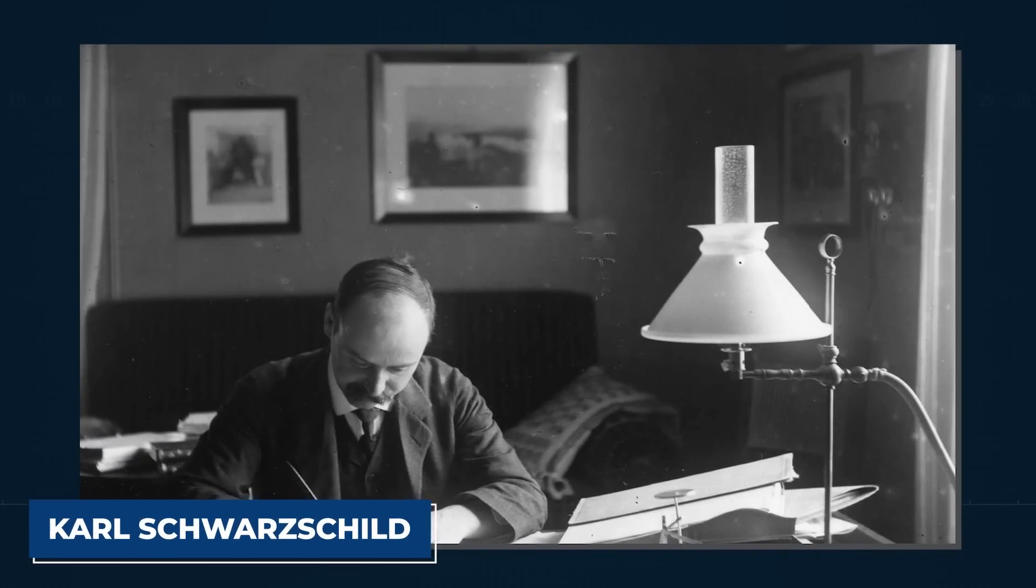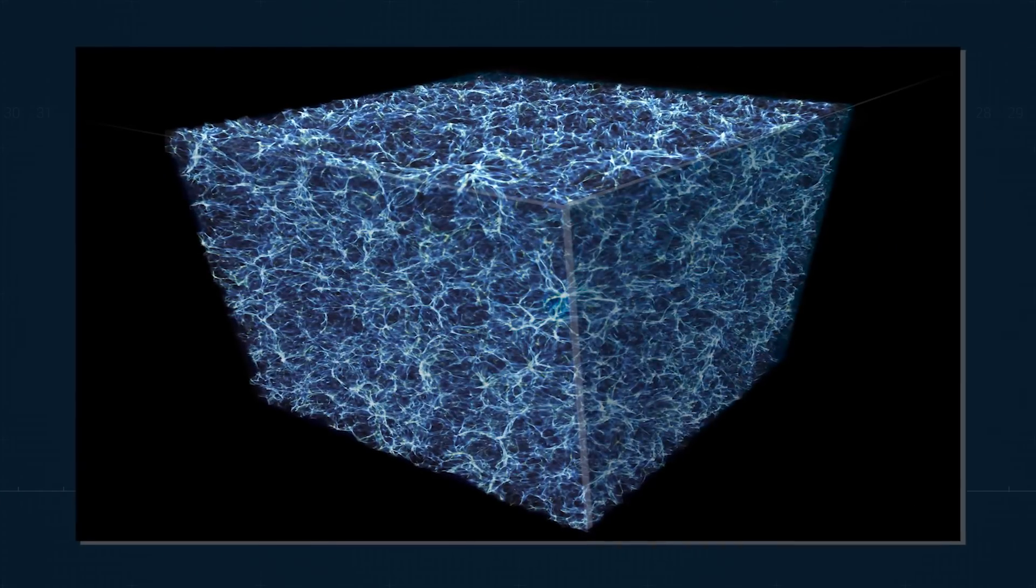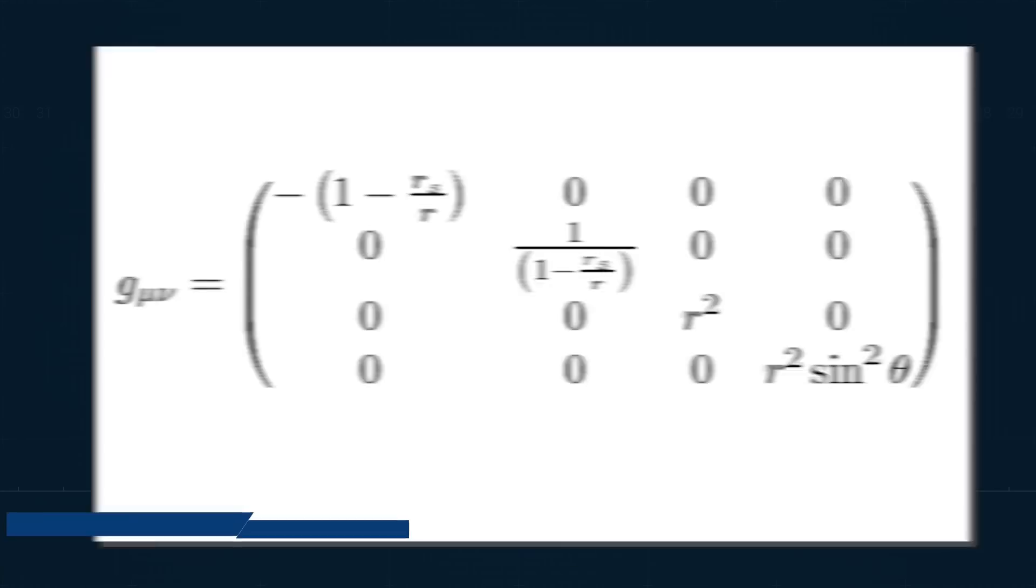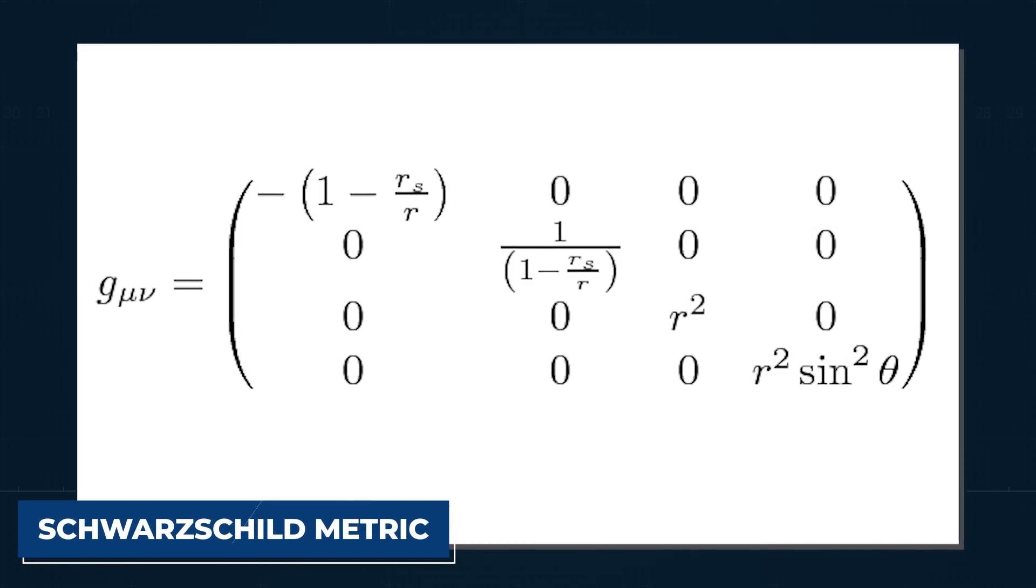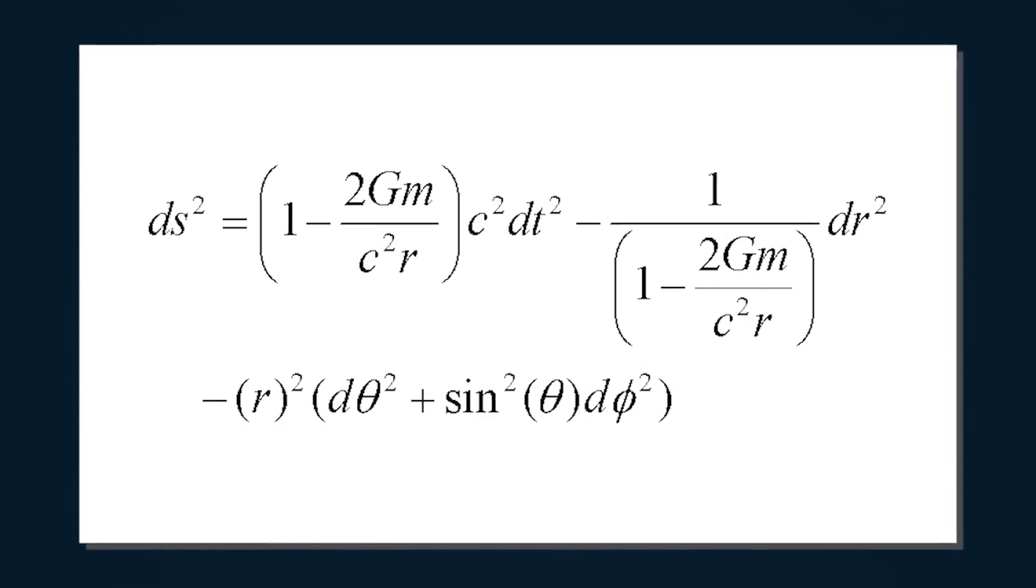Carl Schwarzschild would then use Einstein's field equations, solving them to find the equation of mass in empty space-time or an area completely void of all matter. This resulted in the Schwarzschild metric, which we will spare you as the equation itself is incredibly complex.